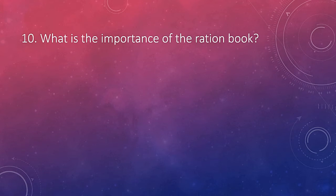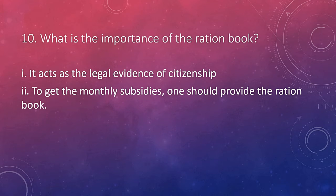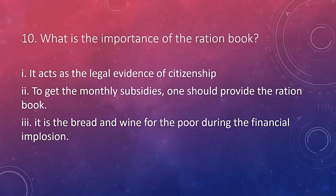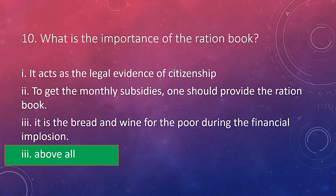What is the importance of the ration book? It acts as legal evidence of citizenship. To get monthly subsidies, one should provide the ration book. It is the bread and butter for the poor during the financial implosion — above all. The ration books were provided by the government to distribute a monthly ration of food through cooperative stores, and they served as identity cards for people since there was no identity card system at that time. Losing a ration book means a very serious issue, as getting another was a hard and time-consuming process. When he lost them — or thought he lost them — he nearly got a heart attack with fear.